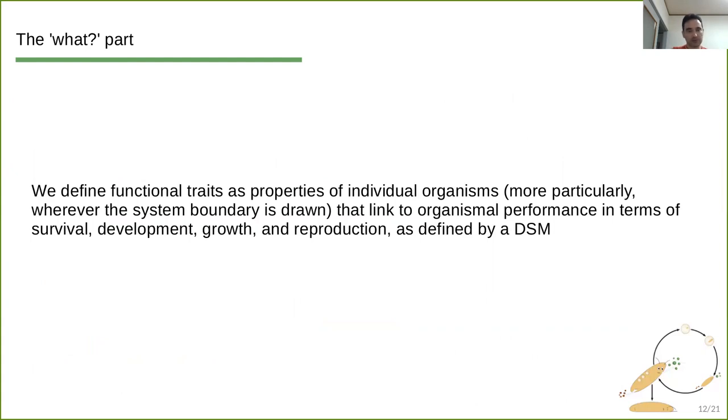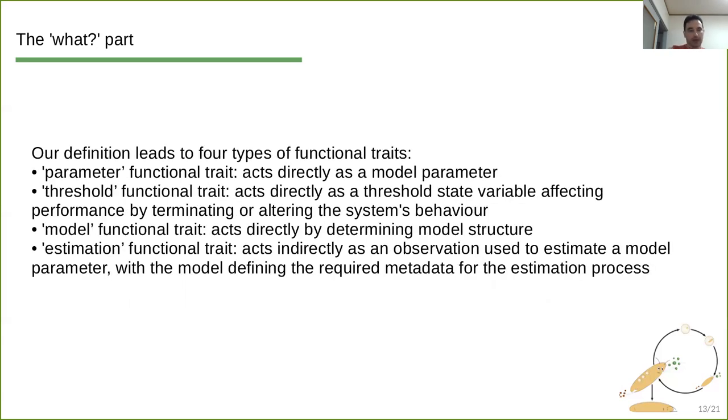So with these details, we can actually go a step further and redefine functional traits as properties of individual organisms that link to organismal performance, so as we said before, survival, development, growth and reproduction. But this time we want them to be defined by a DSM, by the dynamical systems model. We want them to be able to play a role, a visible role in dynamical systems models. So with this definition, we actually can distinguish between four types of functional traits.